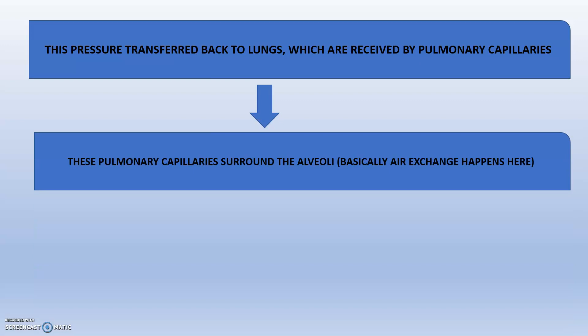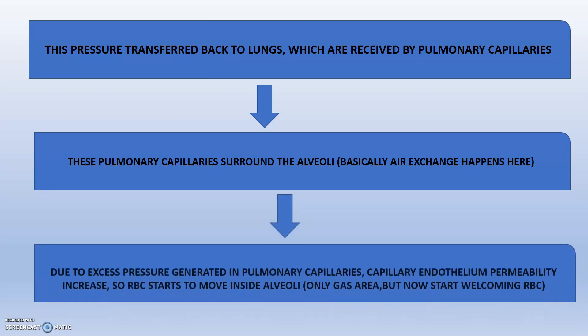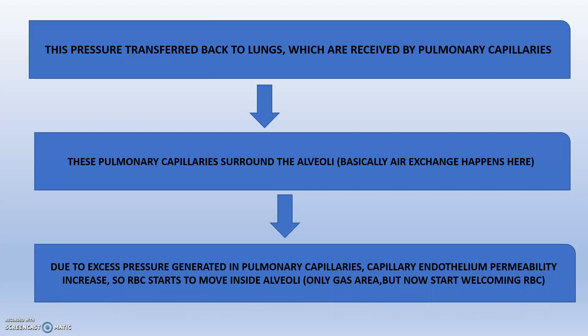These pulmonary capillaries surround the alveoli, where air exchange takes place. The pressure increases inside the pulmonary capillaries due to the problem that originated in the left ventricle. Due to this excess pressure, the endothelial permeability gap widens, and RBCs start to move inside the alveoli — the alveolar spaces — which normally can accommodate only gas.